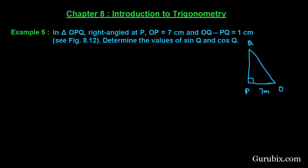Let us see how to solve this example. We are given OP is 7 centimeters and we are given OQ minus PQ equals 1 centimeter. This means OQ equals 1 plus PQ.